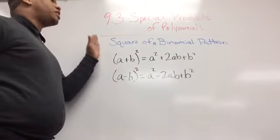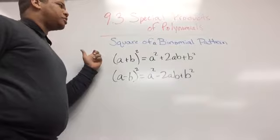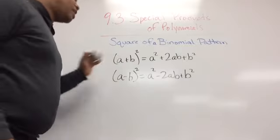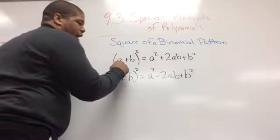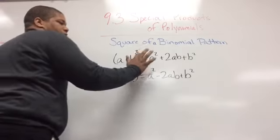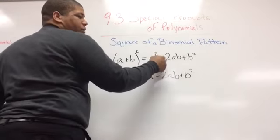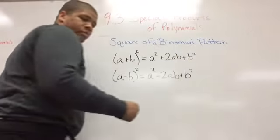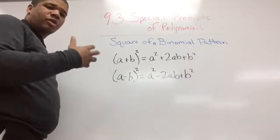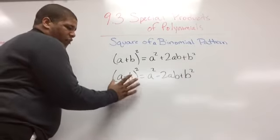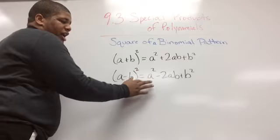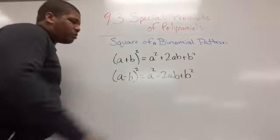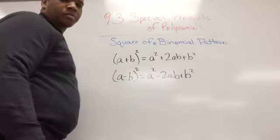Today we're going to be talking about special products of polynomials. The first one we're going to look at is the square of a binomial pattern. If we have (a + b) squared, that equals a squared plus two times a times b plus b squared. We're also going to look at (a - b) squared, which equals a squared minus two times ab plus b squared.